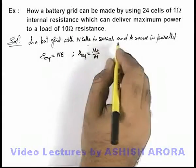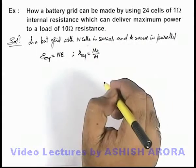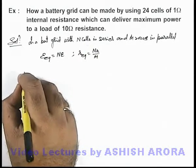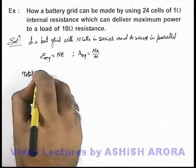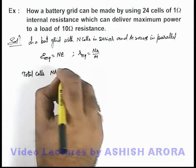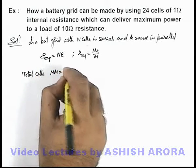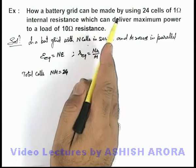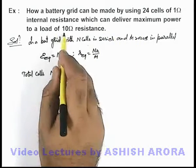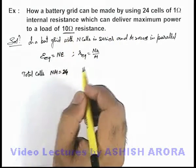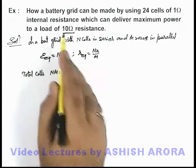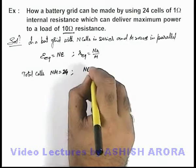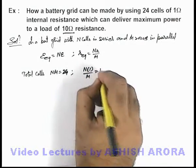If n and m are the number of cells in series and rows in parallel respectively, then we need to find n and m such that the total cells n multiplied by m equals 24. We are also given that the battery grid has to supply maximum power to the 10 ohm external resistance. The external resistance receives maximum power when the equivalent internal resistance nr/m equals the load resistance, which gives nr/m = 10.